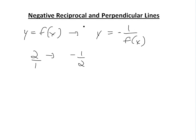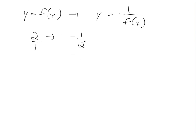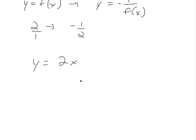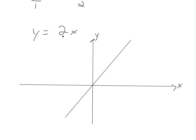What this is useful for is if you have a line — let's say y is equal to 2x. If you were to graph it here, this is y equals 2x, a straight line with a slope of 2 over 1. Then the negative reciprocal — if you use the slope, the slope is 2, or 2 over 1.